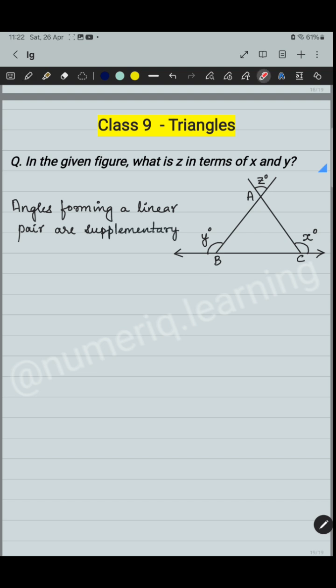If you see in the figure, angle ABC plus Y equals 180 degree. So angle ABC is equal to 180 degree minus Y.